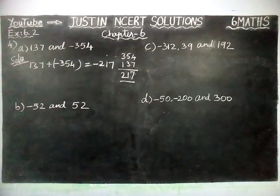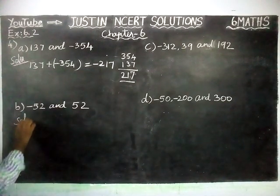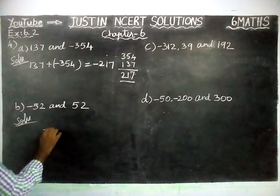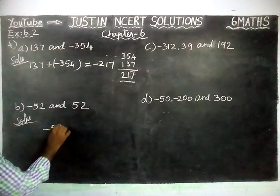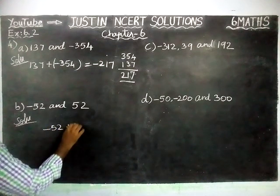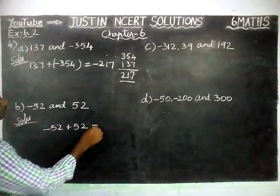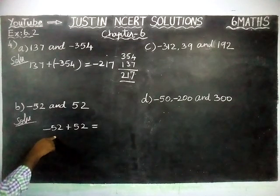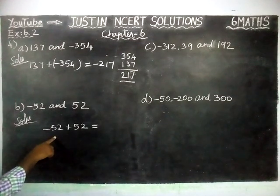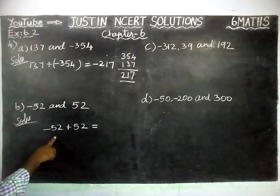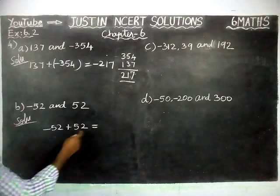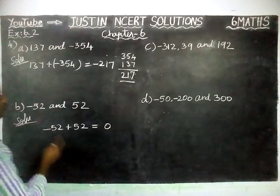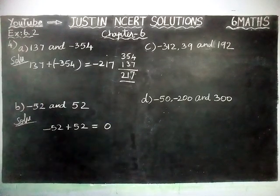So minus 217. And then part B: minus 52 plus 52 is equal to — signs are different, so we have to find the difference. Difference is equal to minus 52 plus 52 equals zero. So that gets cancelled; answer is zero.